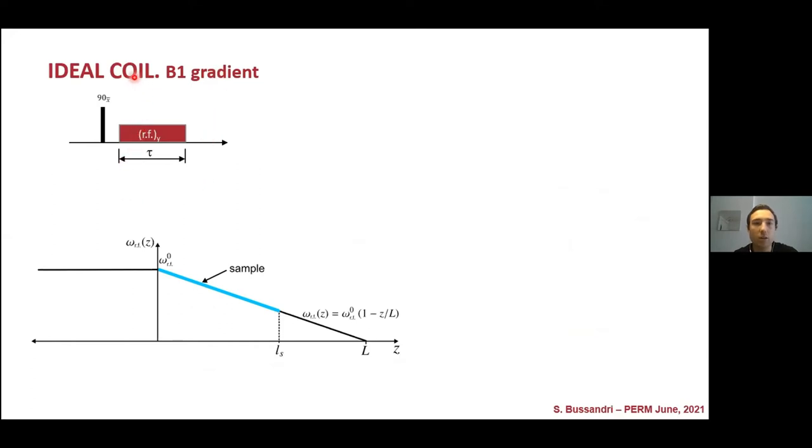Suppose we have an ideal coil with a homogeneous region and an inhomogeneous region defined with a constant gradient, where we model with this expression. Here L represents the position of the coil at which the RF field vanishes. And suppose we have a sample, this length, positioned at this region of the coil. We can establish that the spins on the center of the sample will rotate around the RF with this notation frequency.